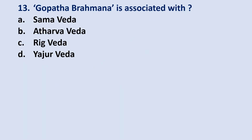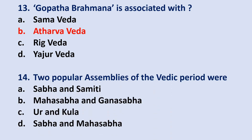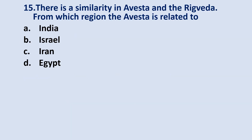Thirteenth question: Gopatha Brahmana is associated with? The answer is option B — Atharva Veda. Question number 14: the two popular assemblies of the Vedic period were? The answer is option A — Sabha and Samiti. Fifteenth question: there is a similarity between Avesta and the Rig Veda — from which region is the Avesta related to? The correct answer will be option C — Iran.